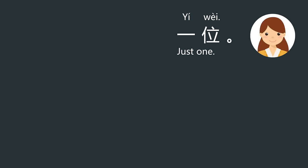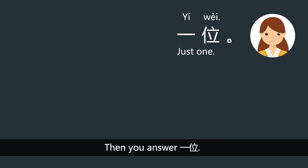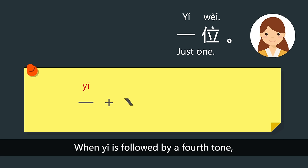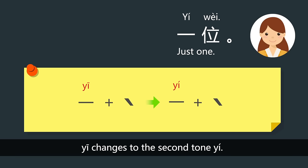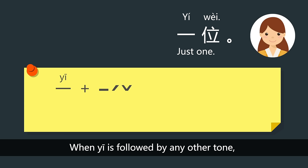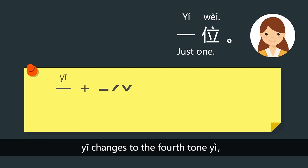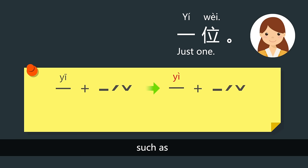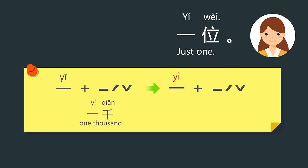几位 — then you answer 一位. When 一 is followed by a fourth-tone character, 一 changes to the second tone: 一位. When 一 is followed by any other tone, 一 changes to the fourth tone. Examples: 一千, 一直, 一起.